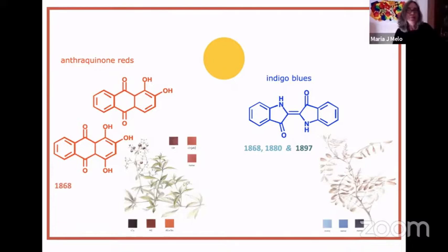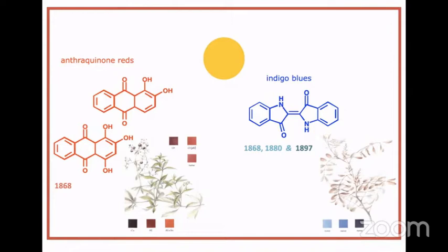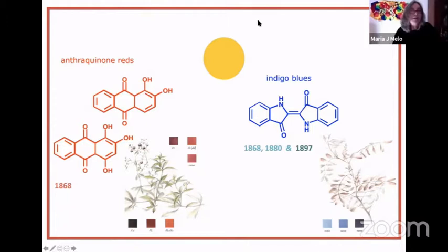So why do I bring you these molecular structures? Because for a chemist, or for someone familiarized with these structures, they are like haikus - these Japanese poems - they speak volumes, they are really important. But I'll focus on anthraquinone reds.